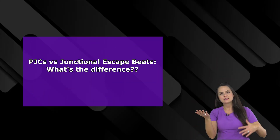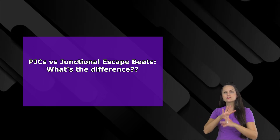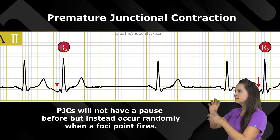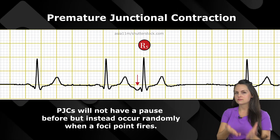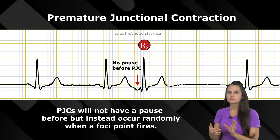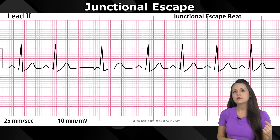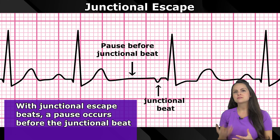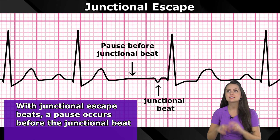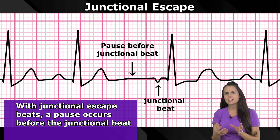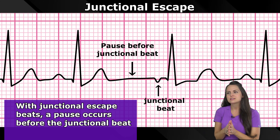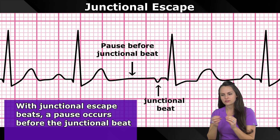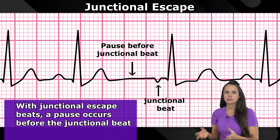You may be wondering what's the difference between a PJC and junctional escape beats. It all centers around a pause. With PJCs, these are premature contractions that happen randomly whenever a foci point in the AV junction decides to fire, so they're not going to have a pause before the PJC. However, with junctional escape beats, a pause occurs before the junctional beat. Those escape beats are helping your heart escape cardiac standstill or cardiac death because the SA node is working too slowly. The AV junction takes over, but there's that pause that happened before the AV junction took over with its beat.